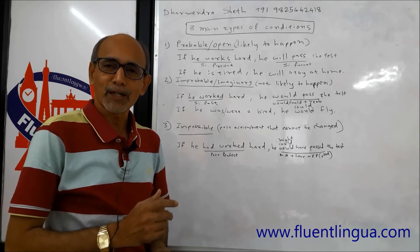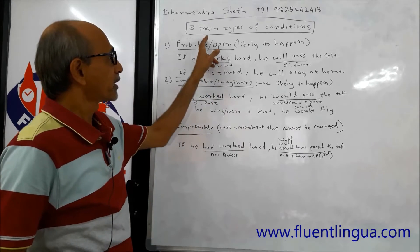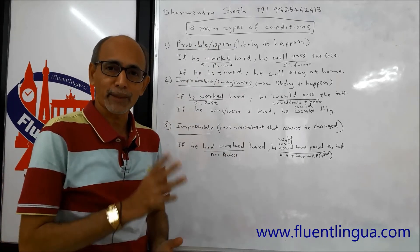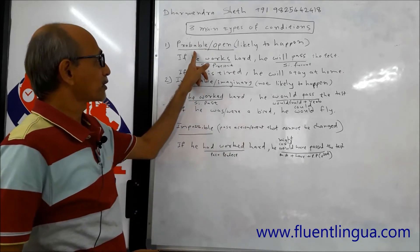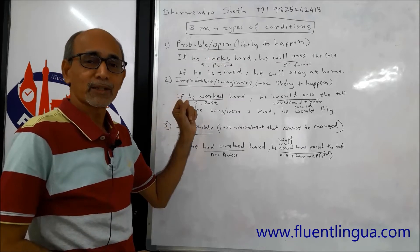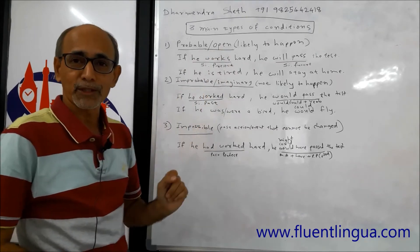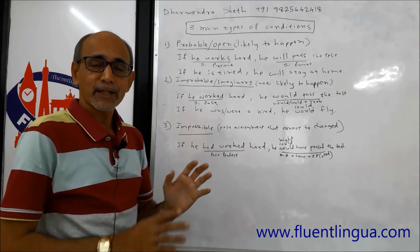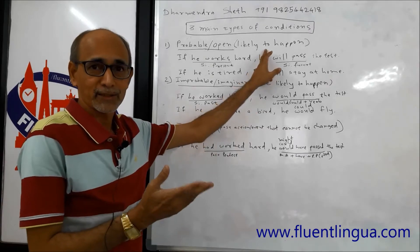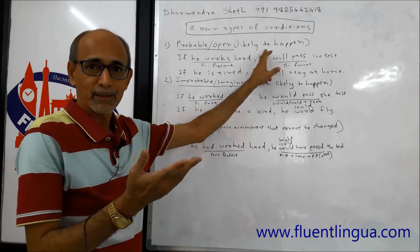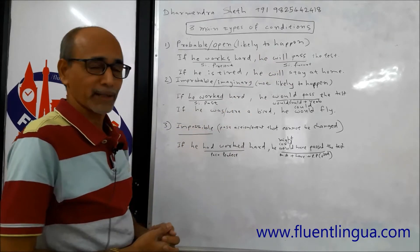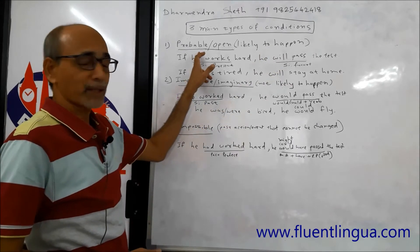In English there are three main types of conditions. The first one is called Probable Condition or Open Condition. This is the condition that can be fulfilled — it is likely to happen.